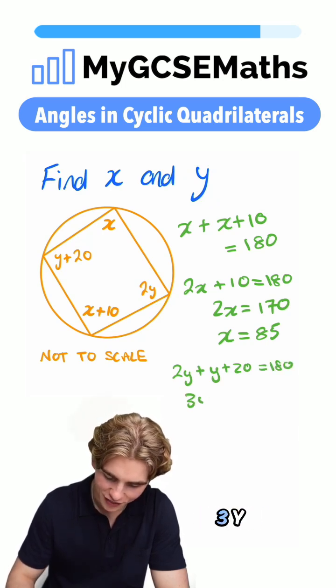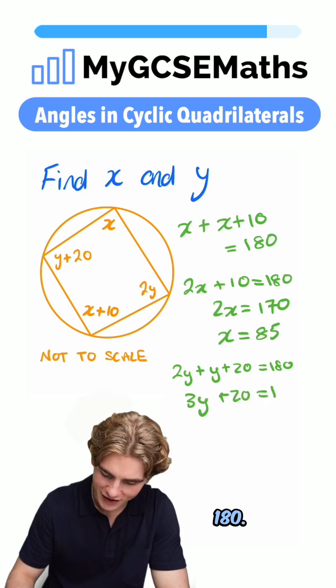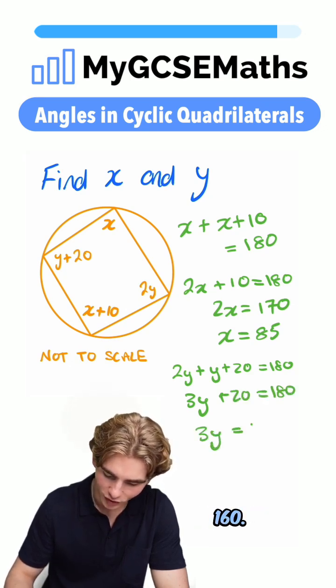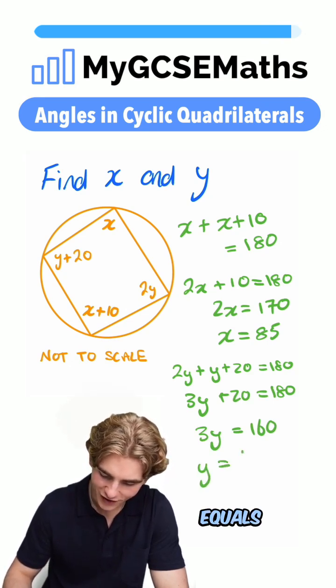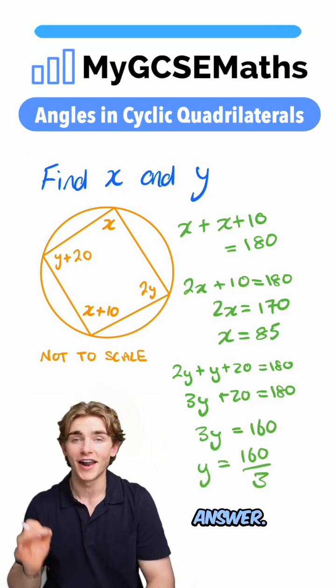Again, we're going to collect our like terms. 3y plus 20 equals 180. Take 20 from both sides. 3y equals 160. And next up, divide both sides by 3. We get y equals 160 over 3, which is going to be our final answer.